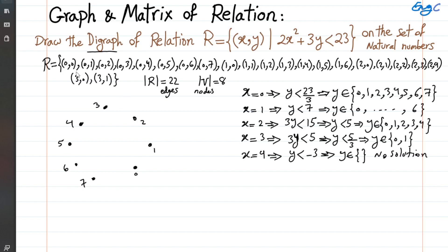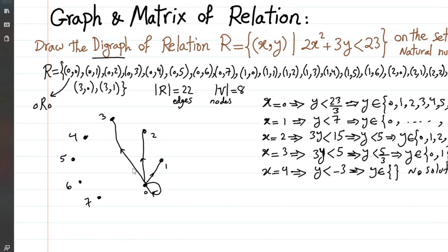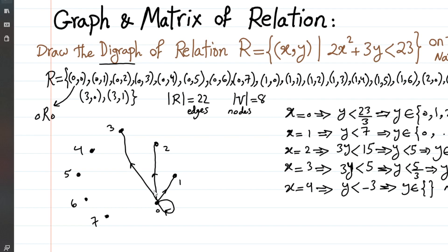With that in mind, we can now form our digraph. We place the 8 nodes: 0, 1, 2, 3, 4, 5, 6, and 7. These are the eight vertices or nodes in this digraph, and now we will show the connections between them.